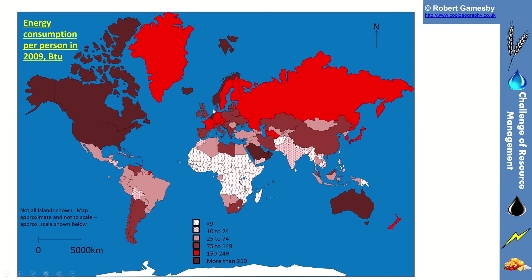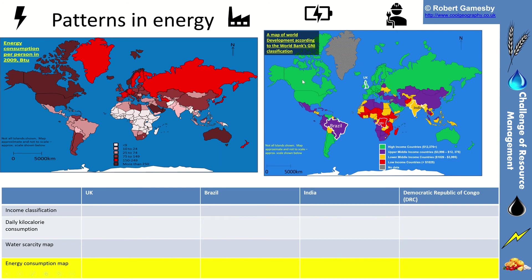The last map is a choropleth map showing how much energy is consumed per person. The darker the colour, the more energy is consumed — so the United States consumes an awful lot of energy. The Democratic Republic of the Congo has low energy consumption per person. You can compare that with the gross national income map — how does it compare?